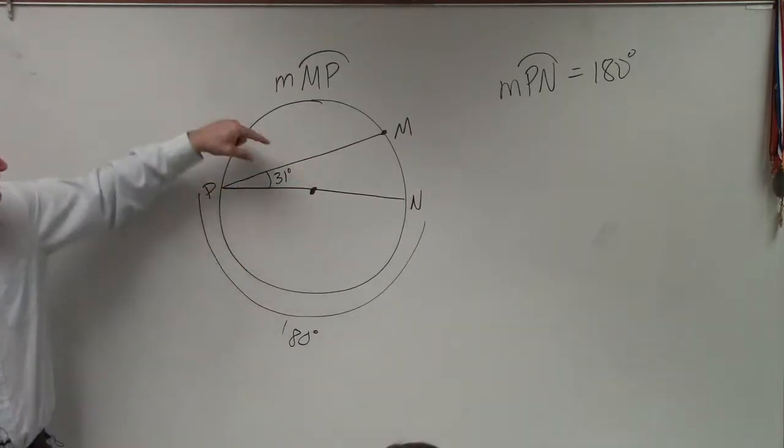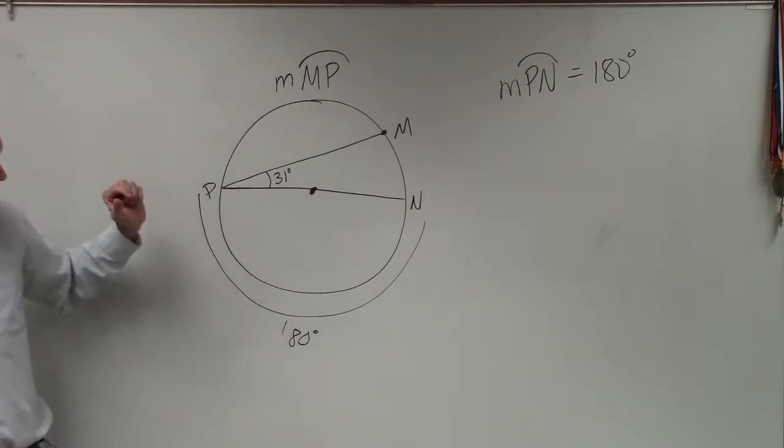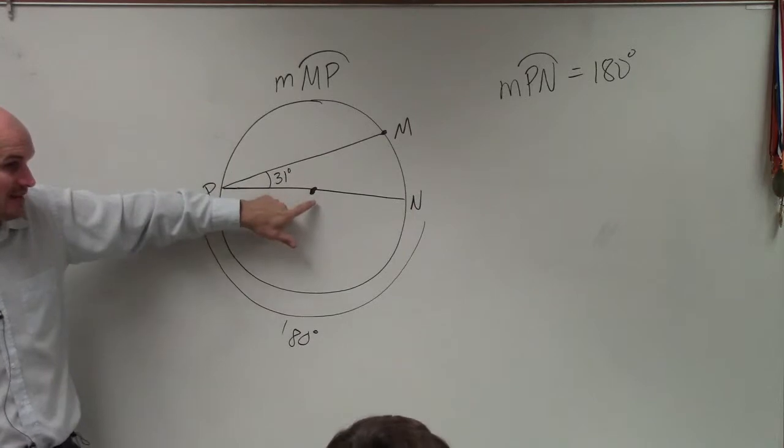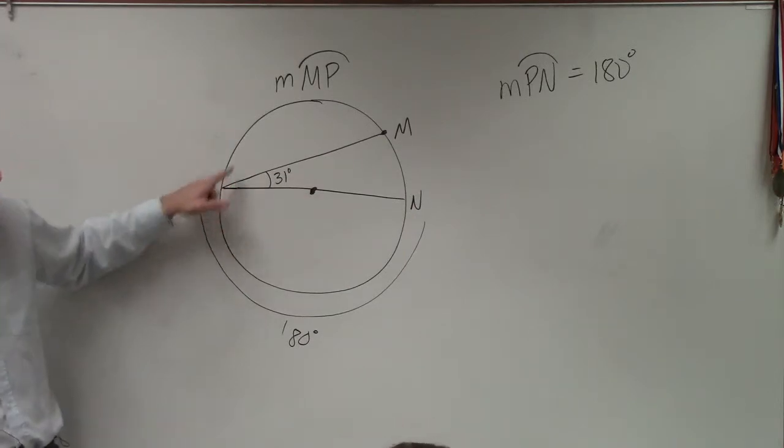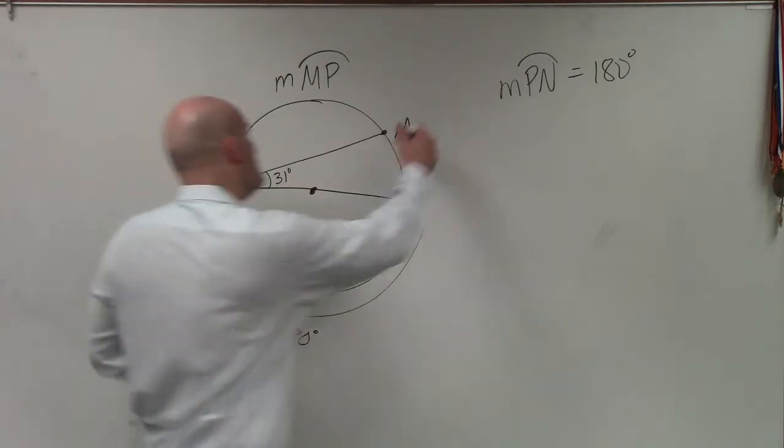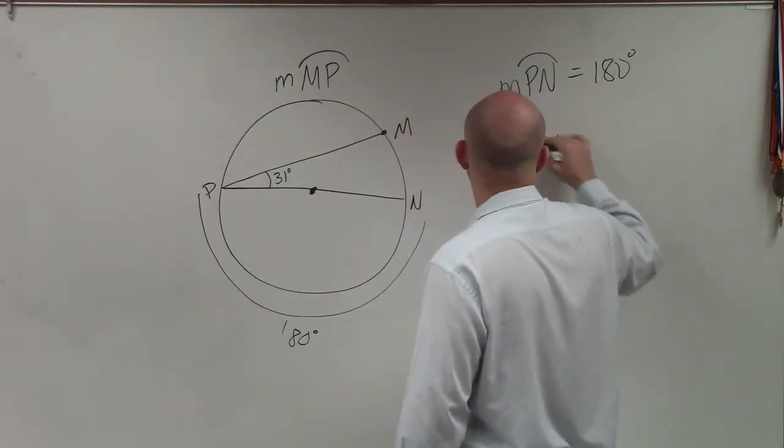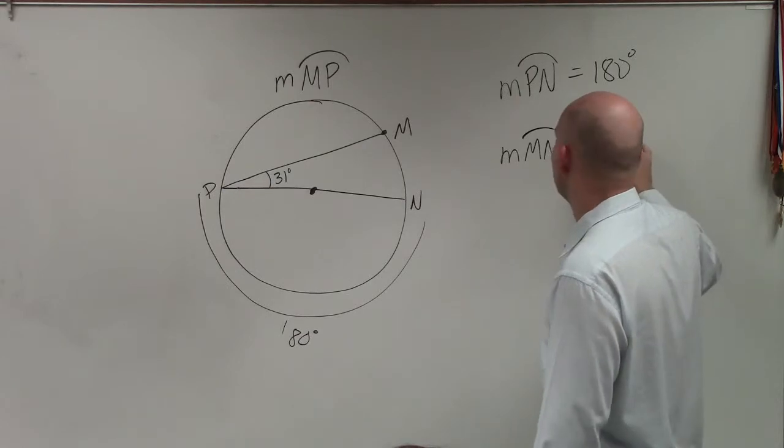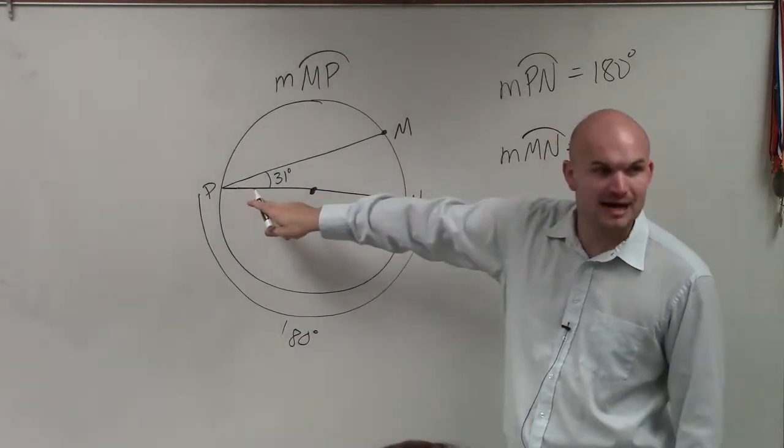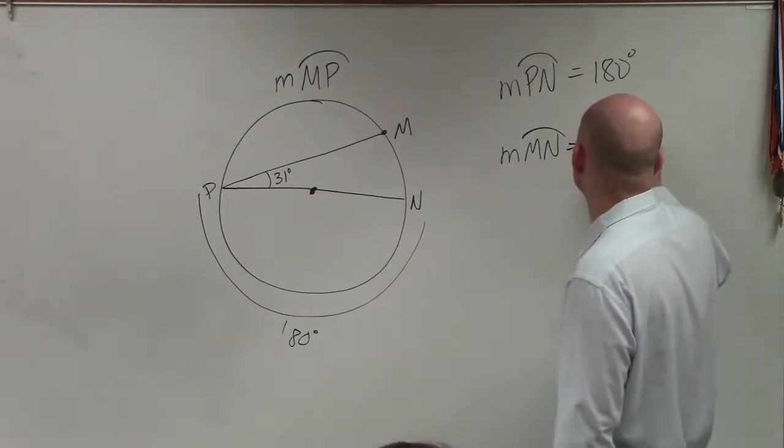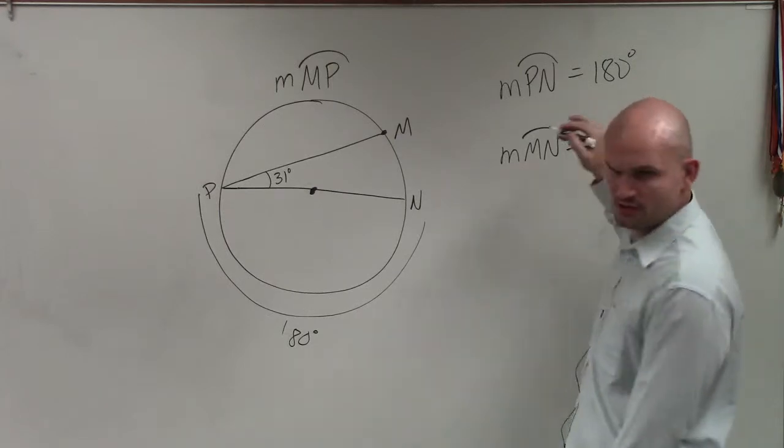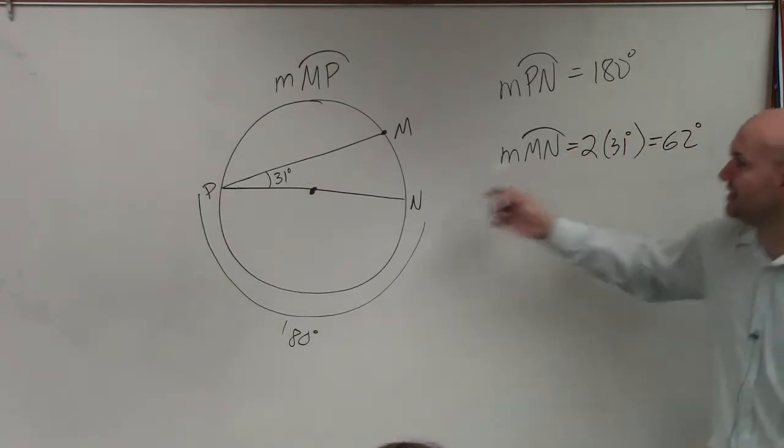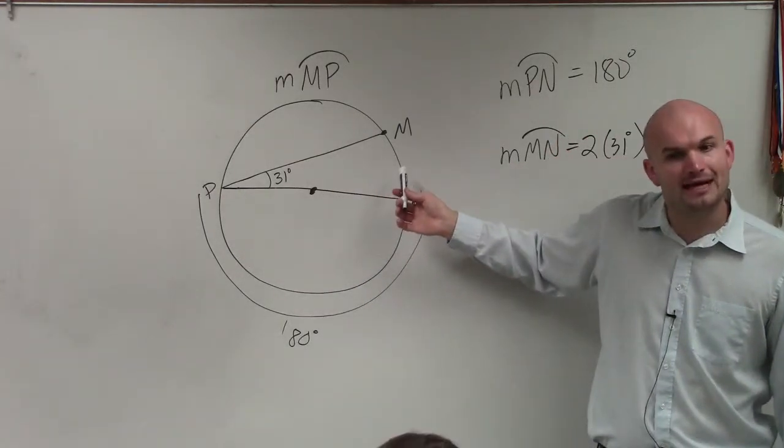The next thing we talked about is when you have an angle that is on the circle, it's not a central angle, but the vertex is on the circle, then the measure of MN is going to be 2 times this angle. So it would be 2 times 31 degrees. That was in our notes that we talked about. So that's going to be 62 degrees. It's double your angle.